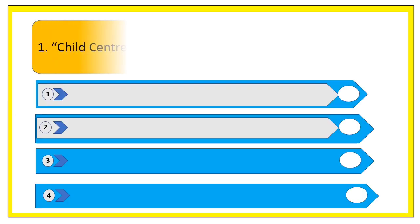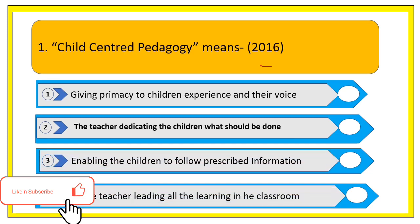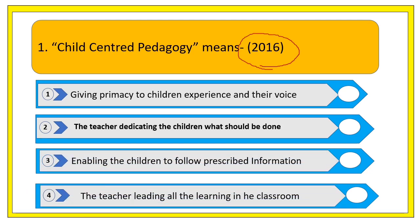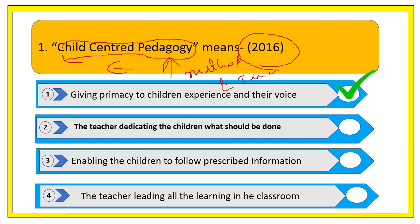Question number one: 'Child-centered pedagogy means...' — this question came in the last year paper of 2016. Pedagogy simply means the methods and techniques we apply in a teaching-learning process. So child-centered pedagogy means the methods and techniques applied for the convenience of the child's learning. The correct option is: giving primacy to the children's experience and their voice, because these methods and techniques are used for the convenience of the child's learning.